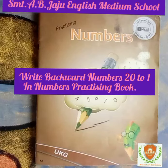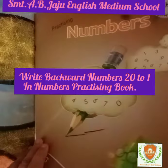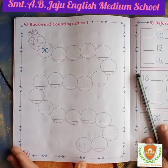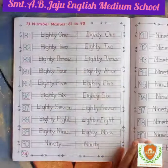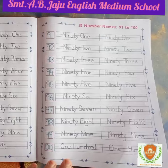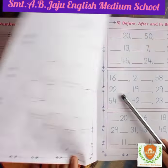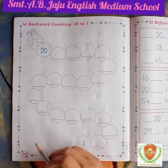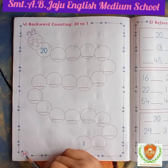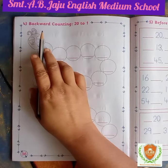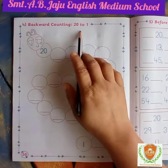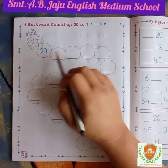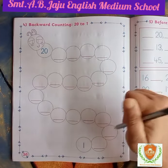Good morning students! Today we are going to write numbers backward in our practicing number books. Open the book. In the previous video we learned and wrote trace numbers and name spellings from 91 to 100. Now write down numbers backward. Page number 36 — on the top, backward counting 20 to 1. This is the picture of a caterpillar.